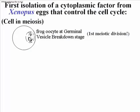The first chemical factor that controlled some aspect of the cell cycle was isolated from developing frogs' eggs. Remember that frogs' eggs are quite large and easily observed through the light microscope. As meiosis I, the first division of meiosis, begins, the nuclear membrane disappears — a process called germinal vesicle breakdown.